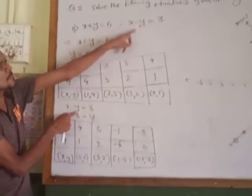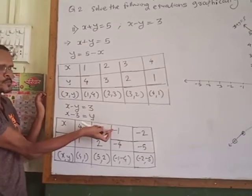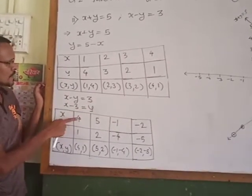Again second equation, x minus y equal to 3. x minus 3 equal to y. x, y.